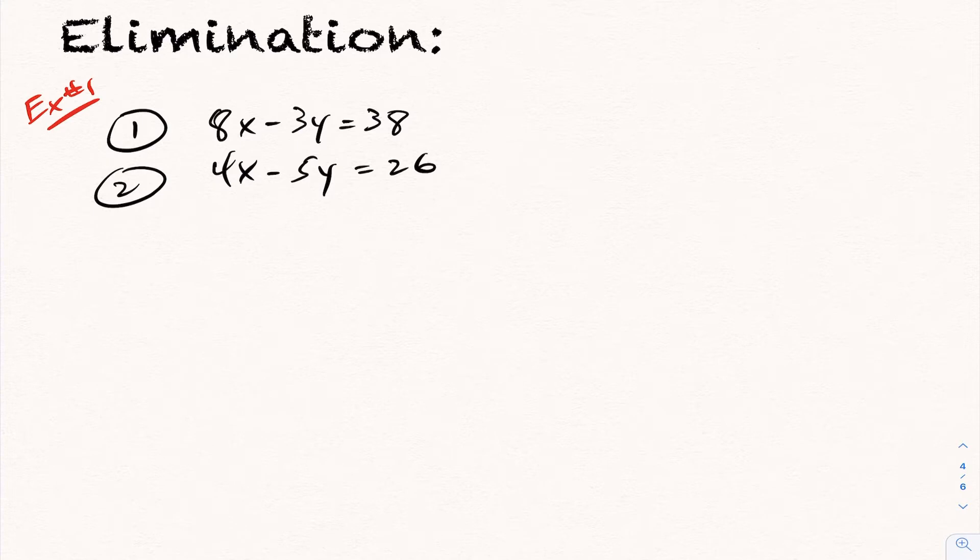So how elimination works is you pick a variable you want to get rid of, you want to eliminate, and you multiply across by a certain number to make the coefficients, the numbers in front of that variable, the same. For instance here, let's say I want to eliminate the x's. I'm going to go ahead and take equation 2 and I'm going to double it. So when you double equation 2, you multiply every term by 2, in which case this will be 8x minus 10y is 52.